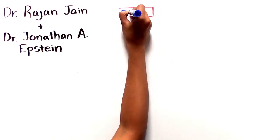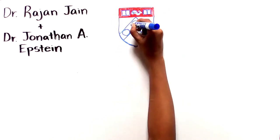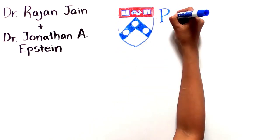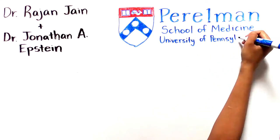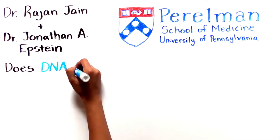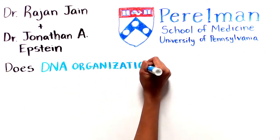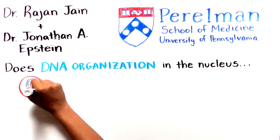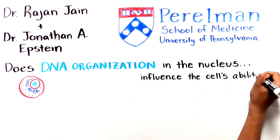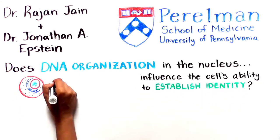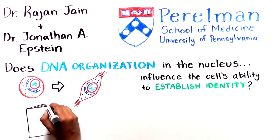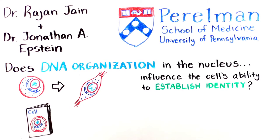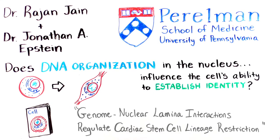A research team led by physician-scientist Roger Jane and Jonathan Epstein at the Perlman School of Medicine at the University of Pennsylvania set out to explore if and how DNA organization in the nucleus influences the ability of cells to establish an identity in response to specific signals. Their findings are published in the journal Cell in an article titled "Genome Nuclear Lamina Interactions Regulate Cardiac Stem Cell Lineage Restriction."